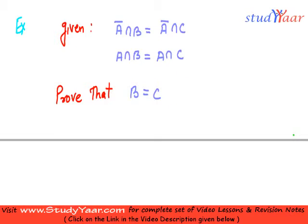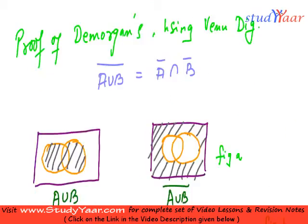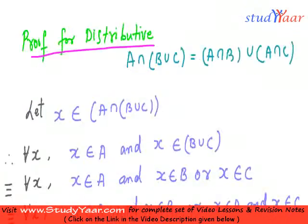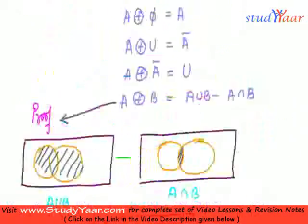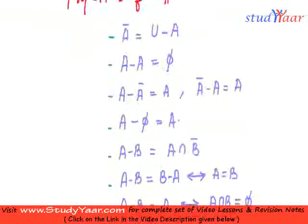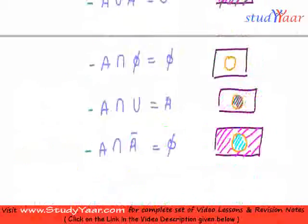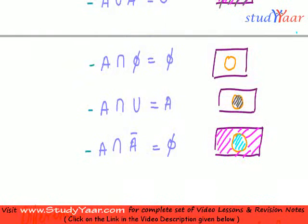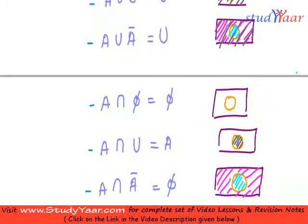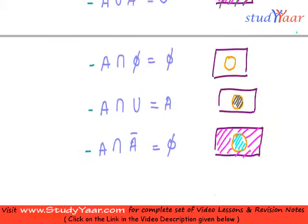Let us see how we are going to do that with the help of all these properties that we have learned, and also the properties of the set operations. First, what I am going to do is use the property which says: a intersection universal set is equal to a.